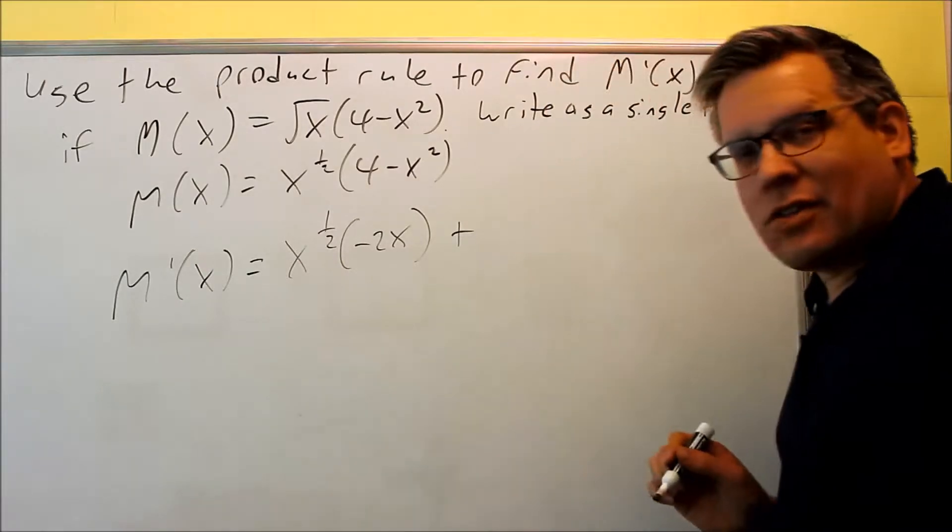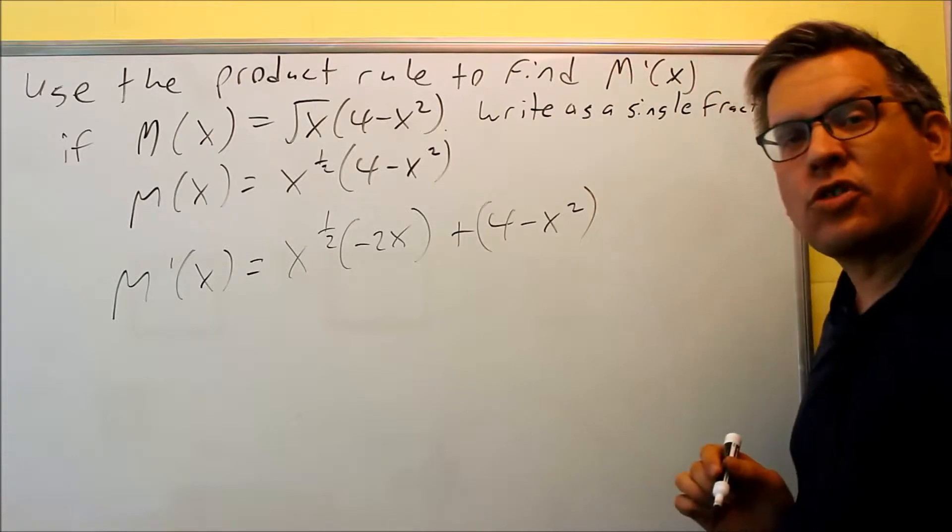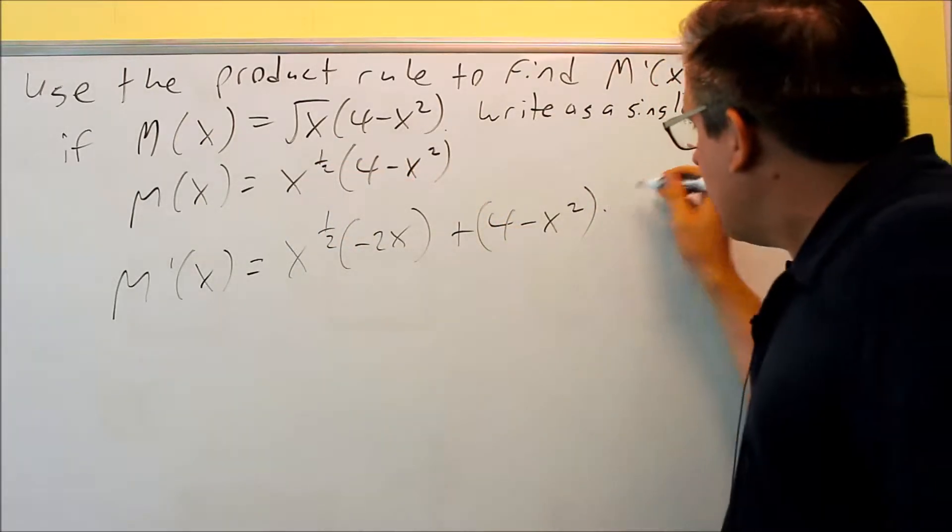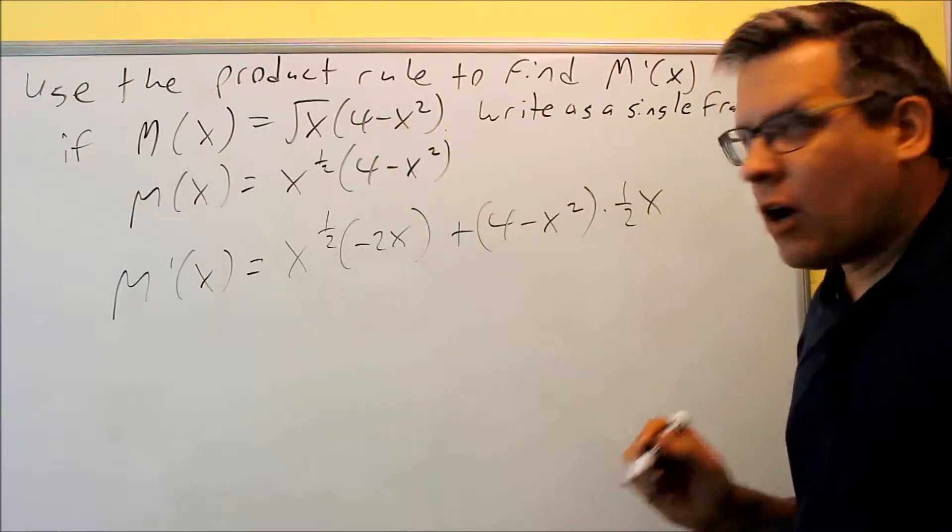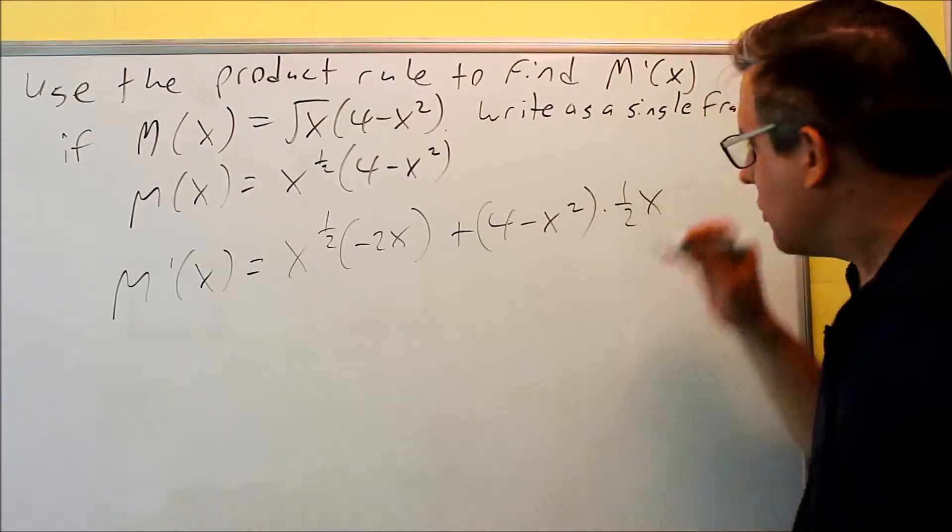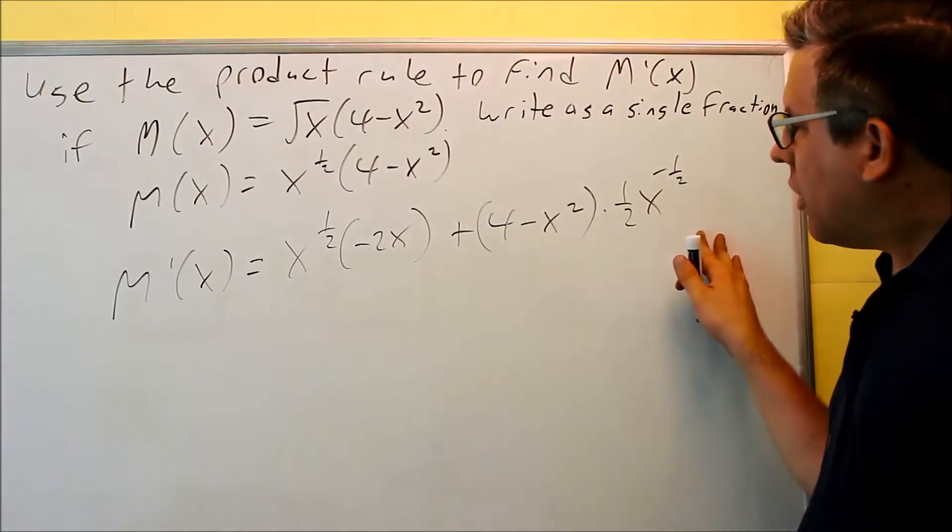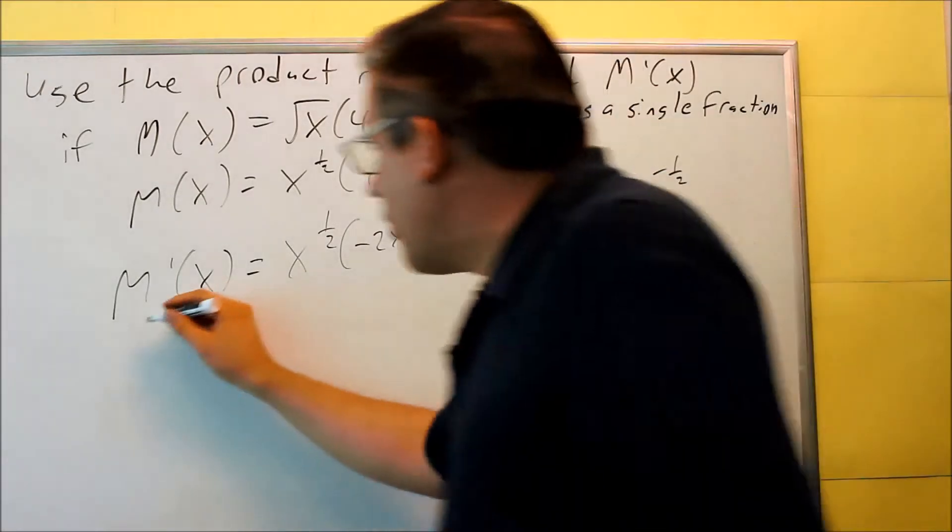Plus the second thing, four minus x squared, times the derivative of the first. The first one is this one here. In this case, the one-half comes down, x, subtract one from that power. So one-half minus two-halves is negative one-half. So this is done using the formula, now it's just a matter of doing some simplifying.